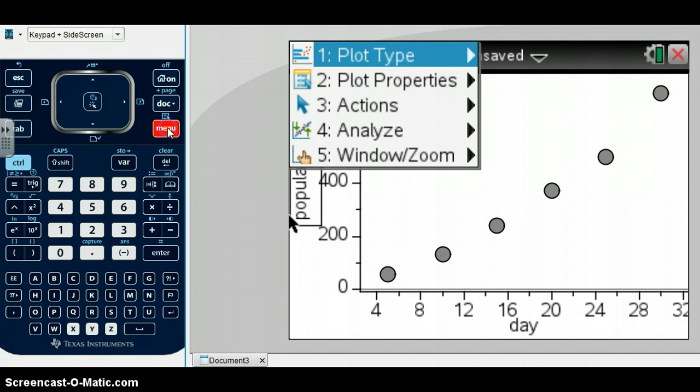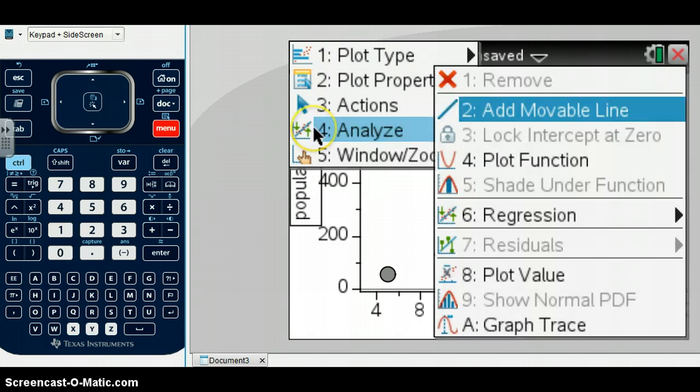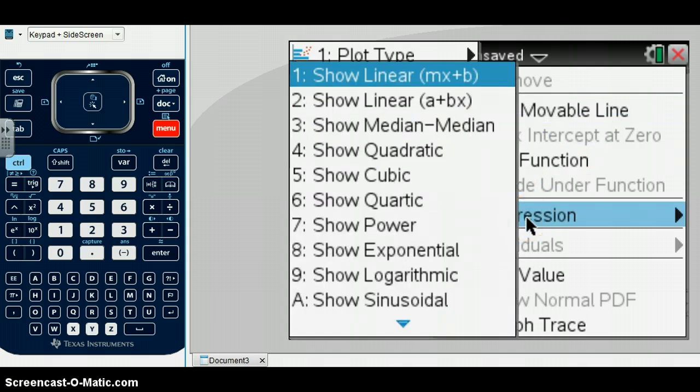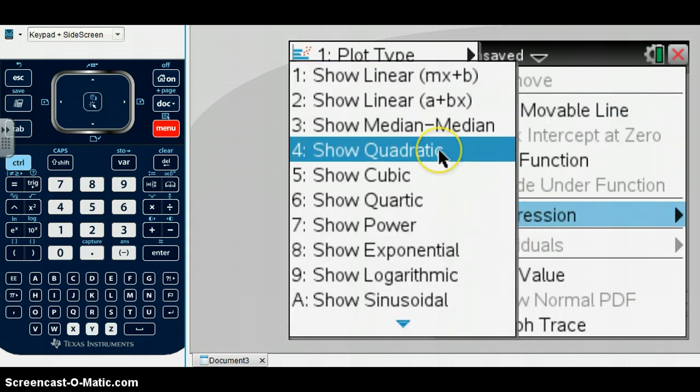And in order to put a quadratic equation to it, we're going to click on Menu, go to Analyze, and then scroll down here to Regression, and we want to put a quadratic equation to this data. So we're going to say show quadratic.